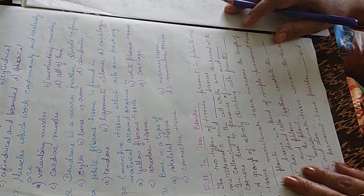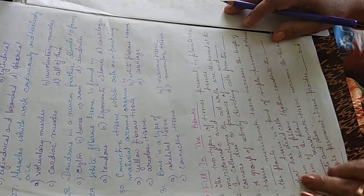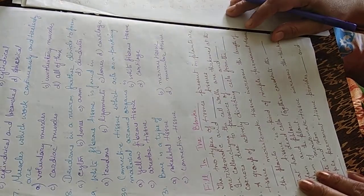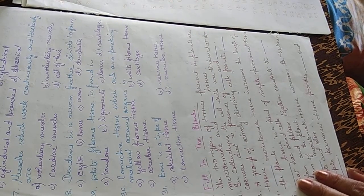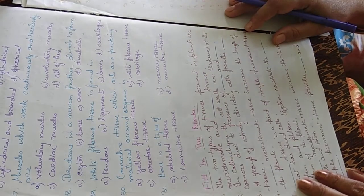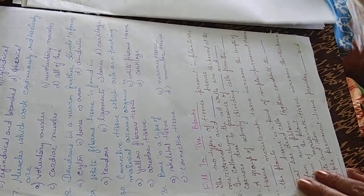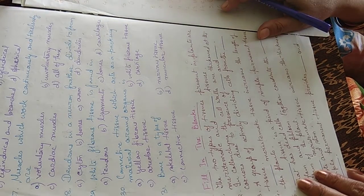Twenty-eighth question: in a neuron, dendrons further divide to form cytons, bones, axons, or dendrites. The answer is dendrites. Twenty-ninth: white fibrous tissue is found in tendons. Thirtieth: connective tissues which act as packing material around organs are areolar tissue.